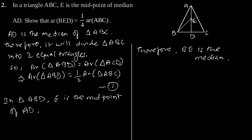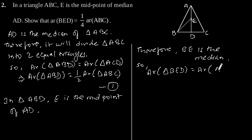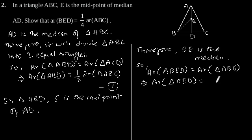So, area of triangle BED is equal to area of triangle ABE. This implies area of triangle BED is equal to half of area of triangle ABD.